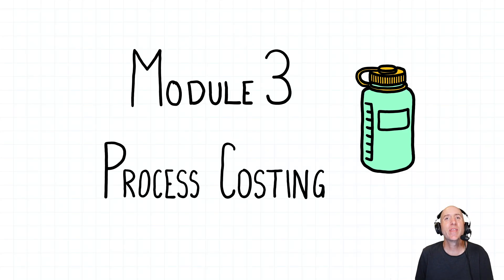Welcome to module three of our course in management accounting. This module is called process costing. Now you'll recall last chapter we introduced job order costing, which is for companies trying to figure out the cost of whatever they're selling when they have a custom product. Every customer is a little bit different. I customize it for them.